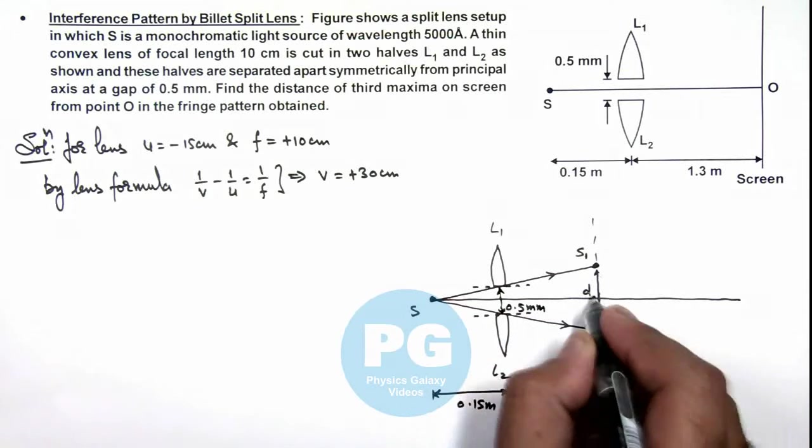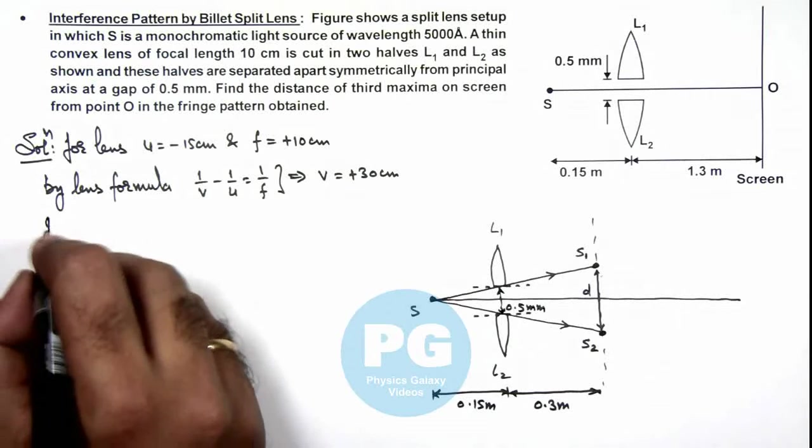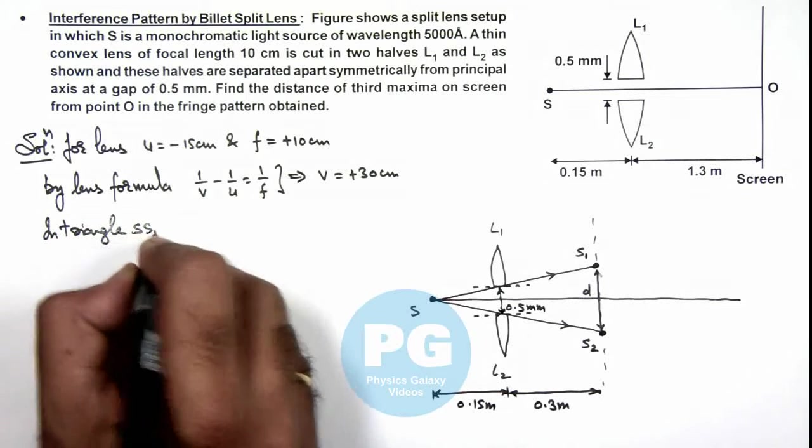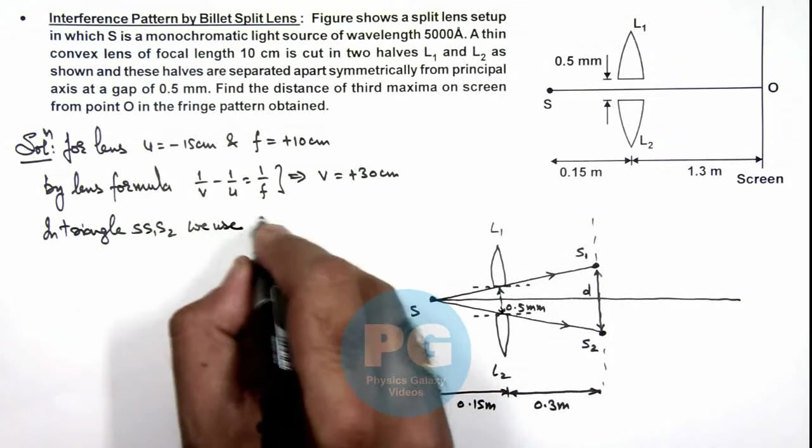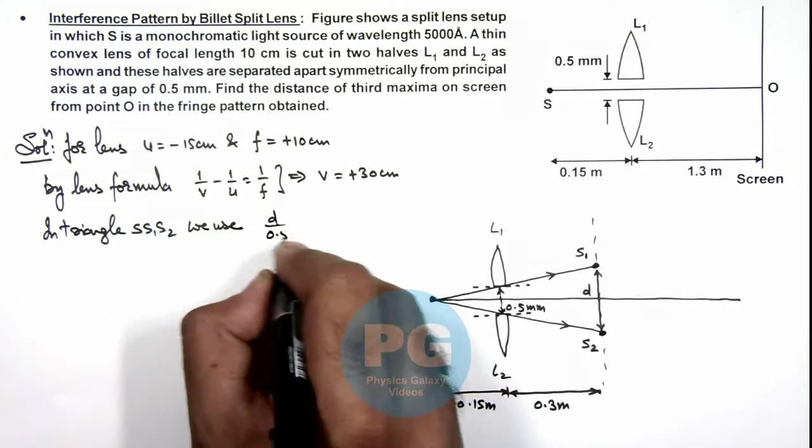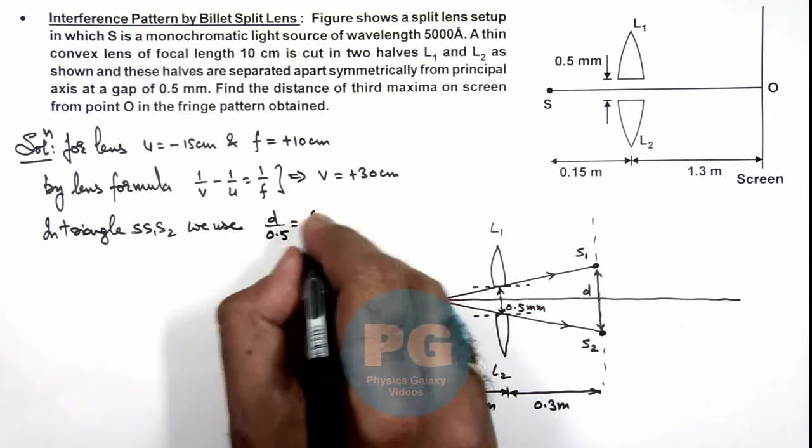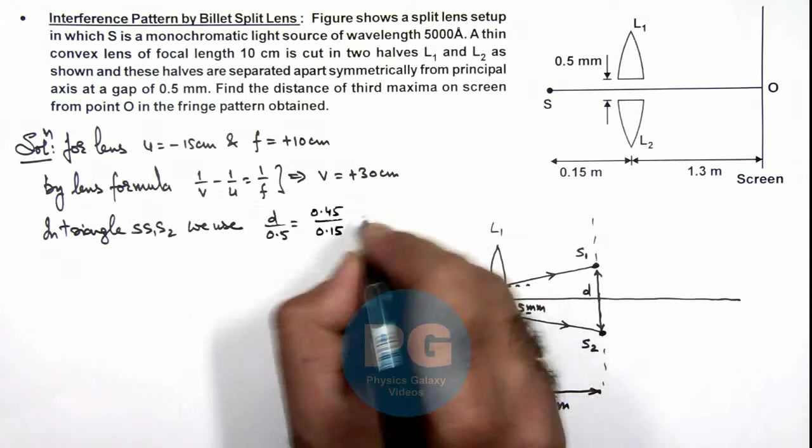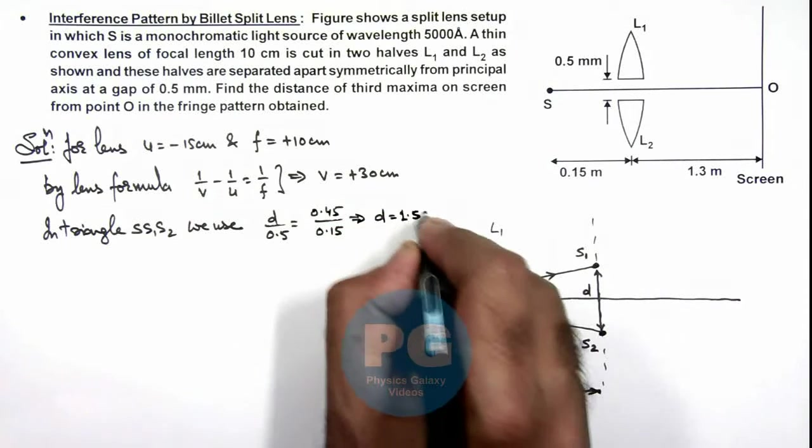We can calculate the value of d from this triangle. We can write in triangle S S1 S2, we can use d/0.5. For this triangle we can write 0.45/0.15, which gives us a value of d as 1.5 mm.